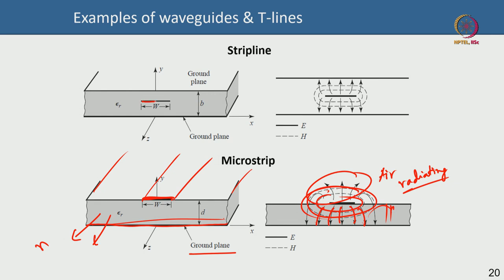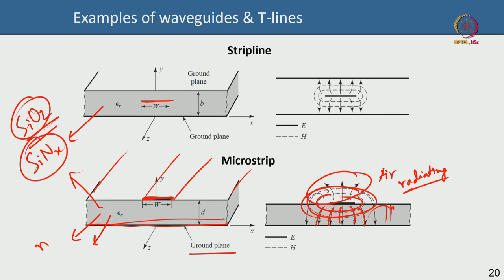The electric field lines come up and the magnetic field lines are circular. Part of both electric and magnetic fields are inside the dielectric semiconductor, and part are in the air above — the part in the air is effectively radiating out the signal. In strip line, the metallic line is fully enclosed inside the dielectric substrate, which could be silicon nitride or SiO2 — dielectrics routinely used in semiconductor fabrication for passivation and inter-metal isolation.